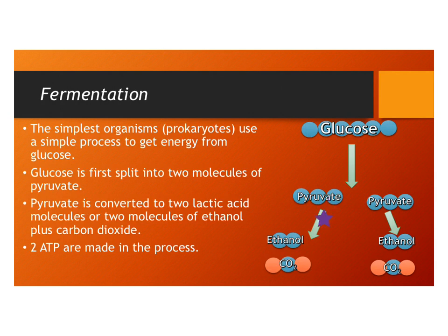From there, the pyruvate is further converted into two molecules of ethanol — yes, the alcohol you find in alcoholic beverages — and some carbon dioxide is also given off. That pyruvate is broken into a two-carbon molecule and carbon dioxide. In this process, we get two ATP molecules out of one molecule of glucose.